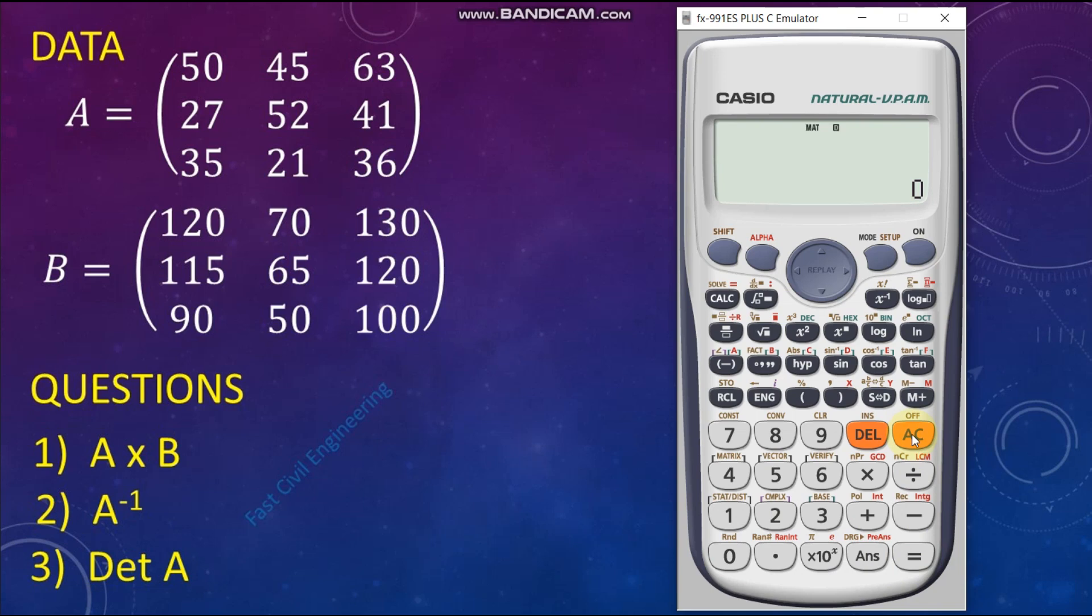Question 1: Matrix A multiply Matrix B. Again, go to Matrix Menu. Shift Number 4. Press 3 for Matrix A. Multiply. Again, go to Matrix Menu. Shift Number 4. Press 4 for Matrix B. Equal. This is the first answer.